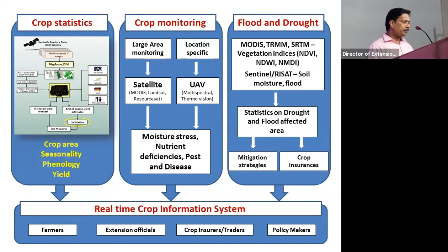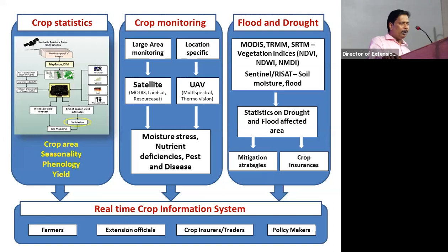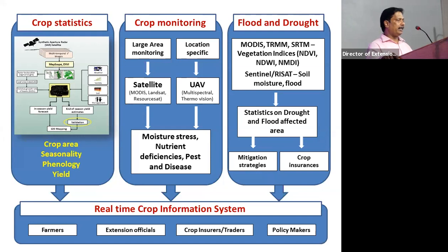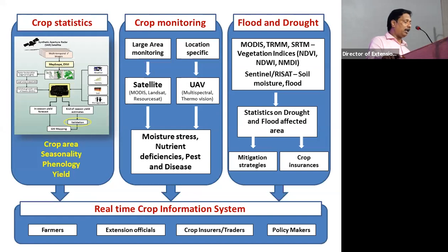The first activity is crop mapping and crop monitoring. Our goal is to generate crop statistics and monitor during crop growth stages, assessing the impact of flood and drought. We integrate satellite data with crop growth models, giving weightage to weather, variety, soil, and management practices to assess end-of-season yield, validated with CCEs conducted by the Department of Economics and Statistics. We provide information on crop area, seasonality — progress of planting — phenology, crop stages, area ready for harvest, and yield — all at district, block, and village level.